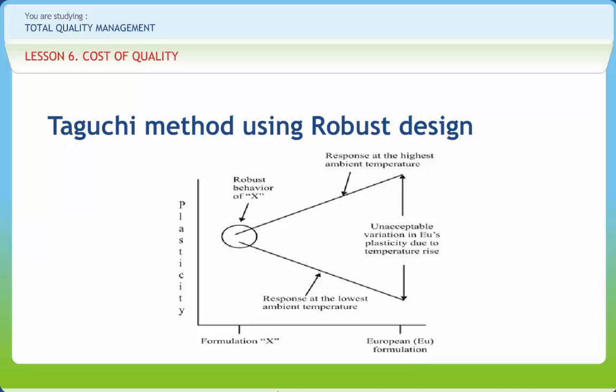Taguchi's contributions may be classified under the following three headings: the loss function, robust design of products and production processes, and simplified industrial statistical experiments.